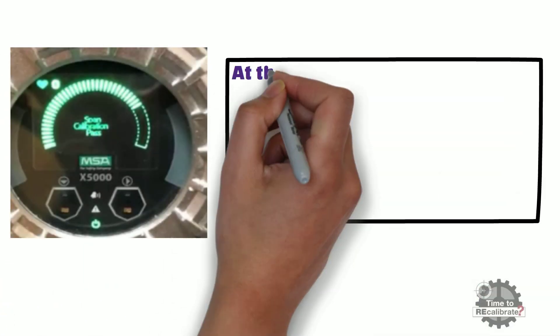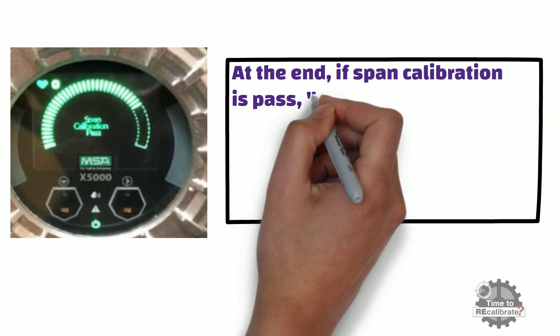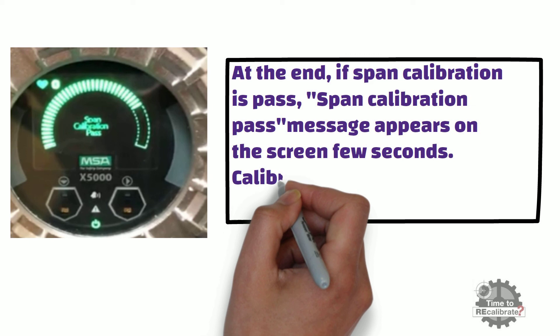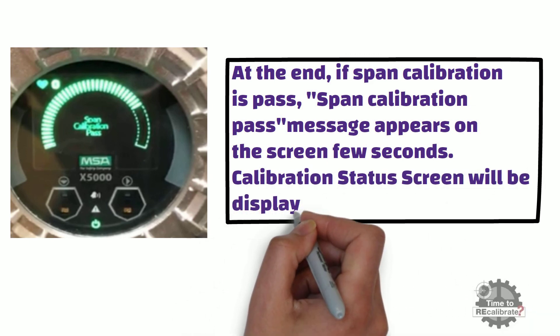At the end, if span calibration is passed, span cal pass will display on the screen for a few seconds. After this, the calibration status screen will be displayed.